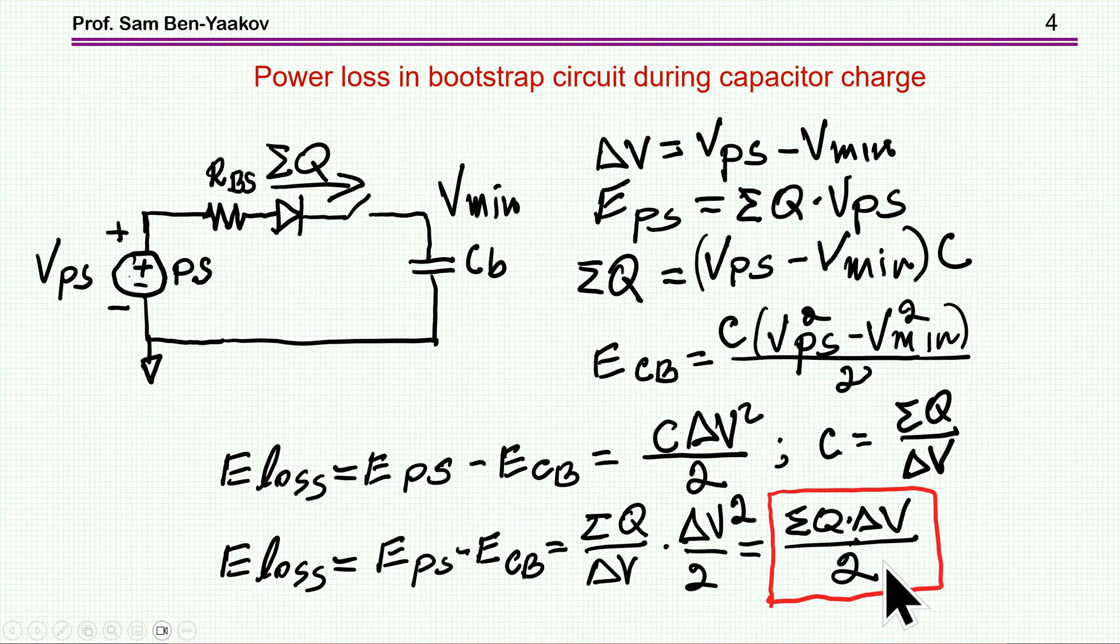I know what is the total charge, and I know what is the delta V that I allow. Knowing these two parameters, I know how much power will be lost. Clearly, we can understand now that whereas the amount of charge is given, if I make this delta V smaller and smaller, then the amount of energy lost will be smaller. I can make this delta V small by making the capacitor large.